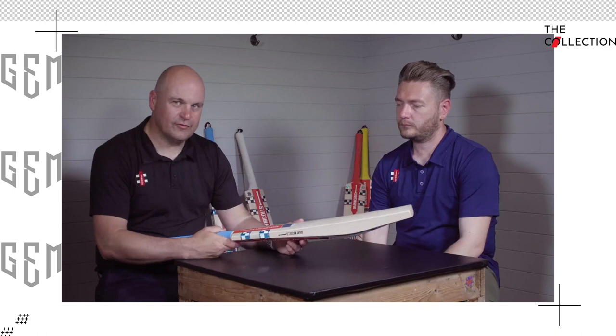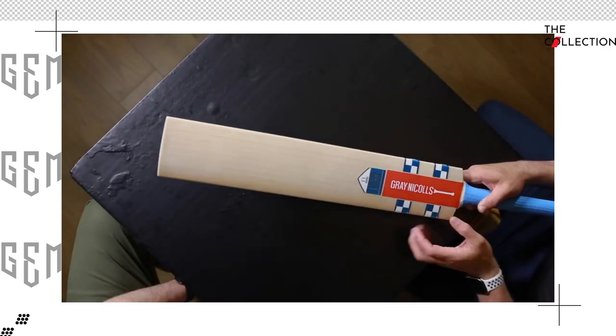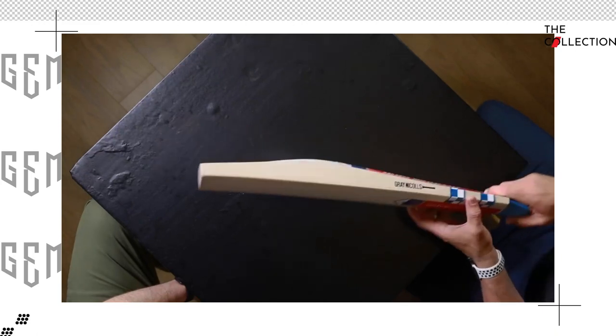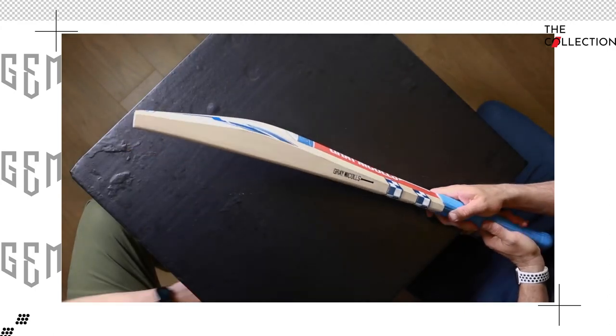The key difference is that it's a slightly shorter blade and a slightly narrower blade. This is not going to affect the hitting zone but it just allows us to get a little bit more wood into the back of the bat, creating that much more powerful and aggressive shape.